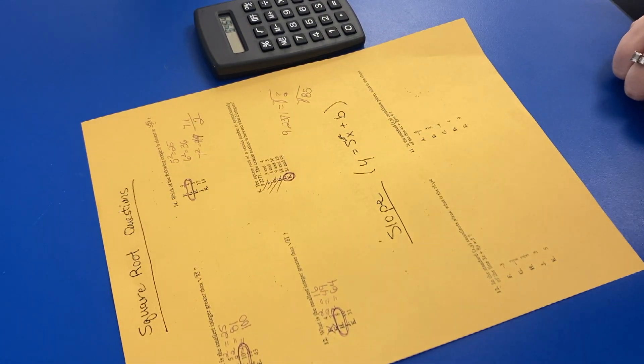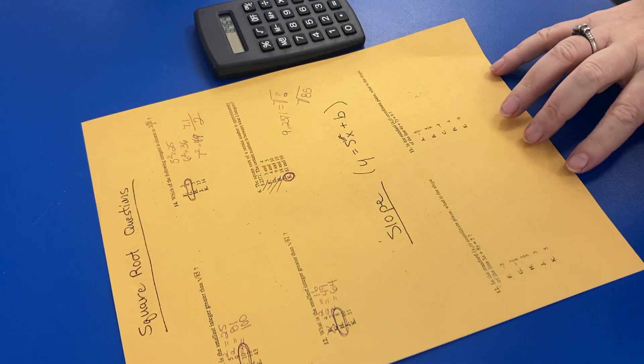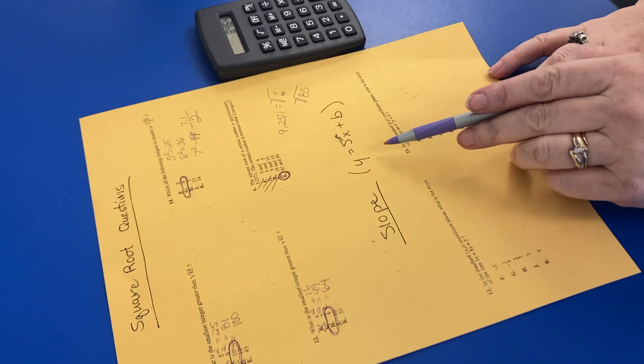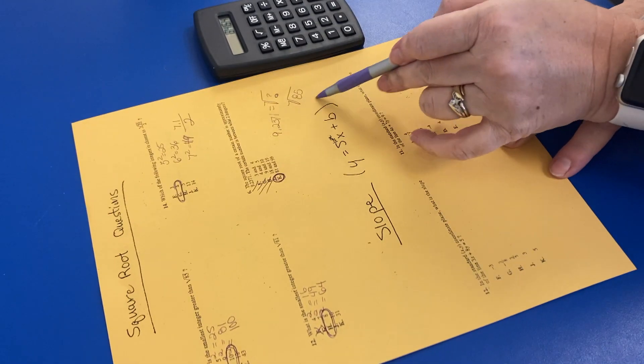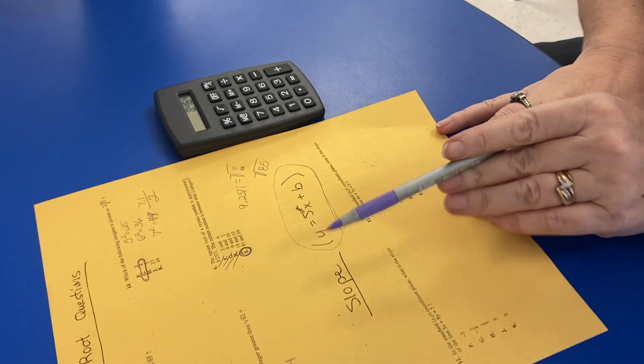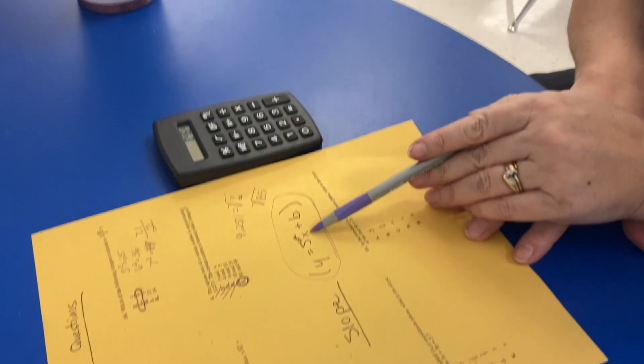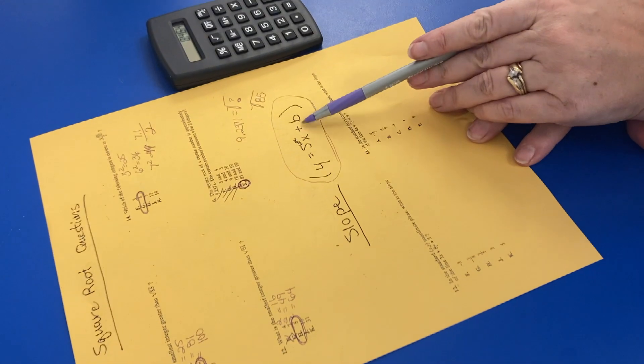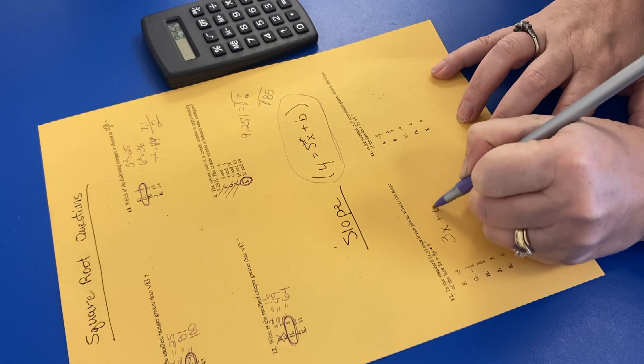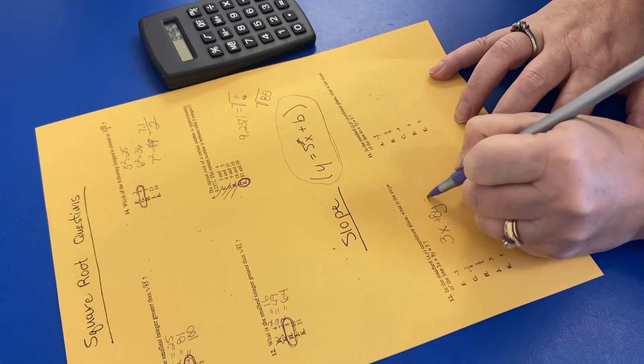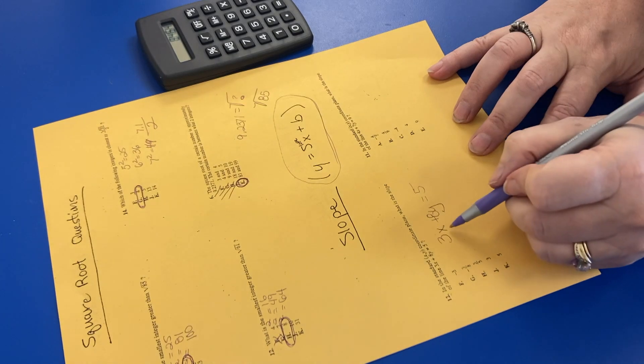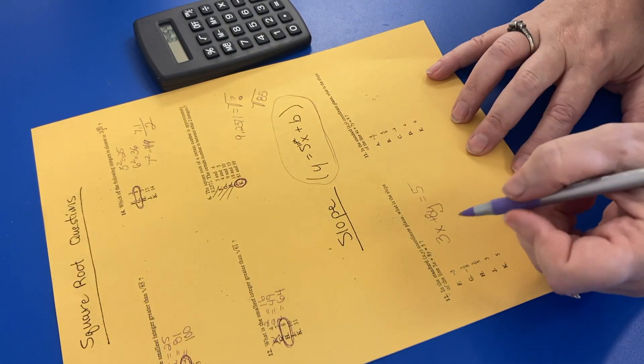So that is it for square root questions. Now, let's go ahead and do the slope. What we're going to do is we're going to use, we're going to put it in this formula. We're going to put the Y to one side, and the slope is going to be connected to the X plus the B. So in this case, we've got 3X plus 8Y equals 5.